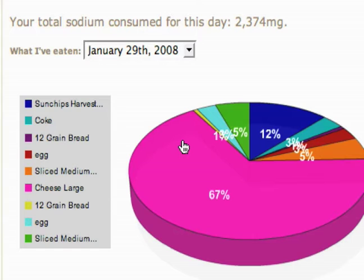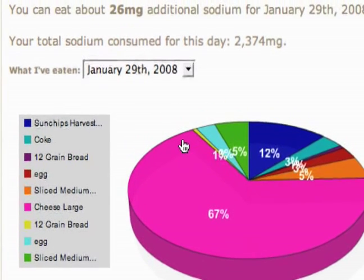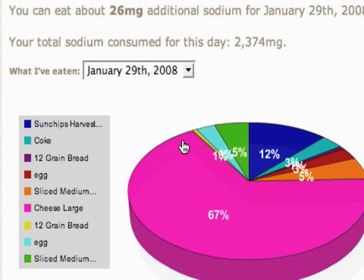You can look at a chart like that and get an idea of how to help you reduce something. A lot of people want to cut some salt out, so to reduce sodium I might try not to eat that cheese sub, because you can see it's taking up a huge slice of this pie chart. That's how you look at the percentages of the nutritional values in the food you're eating each day.